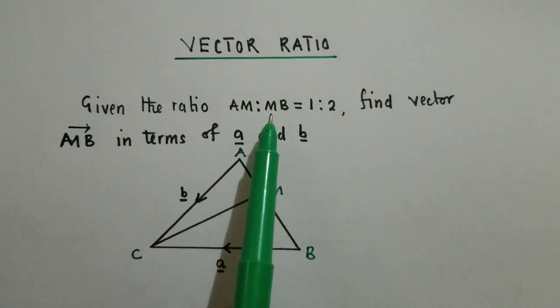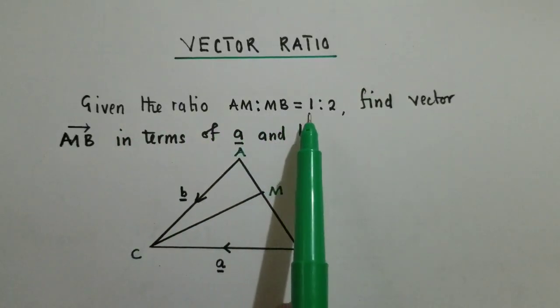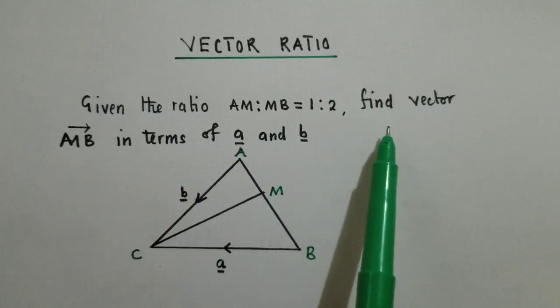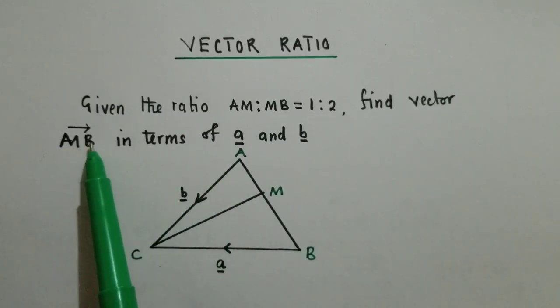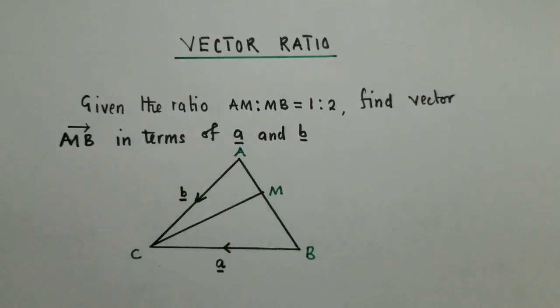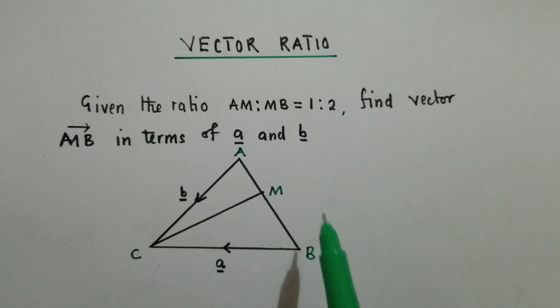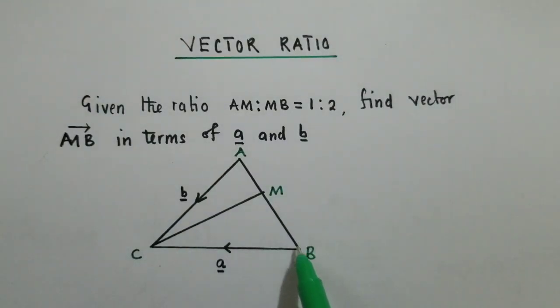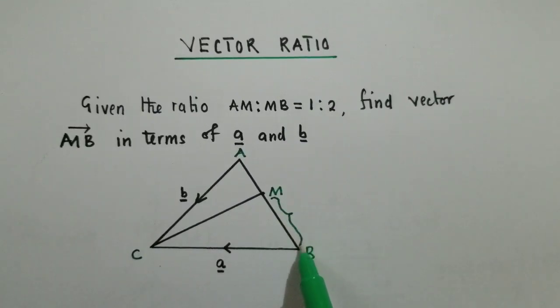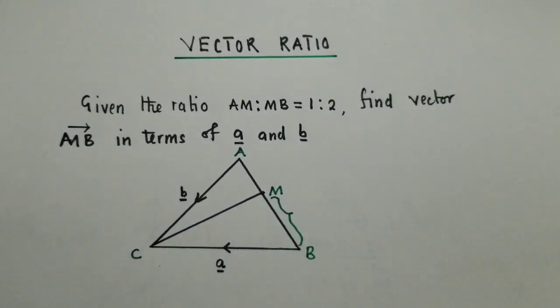Given the ratio AM to MB equals 1 to 2, find vector MB in terms of a and b. So how do we find vector MB? Vector MB is right here. This is where vector MB is found.